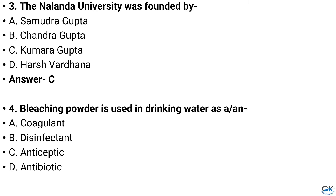Question number 4. Bleaching powder is used in drinking water as a — Option A: Coagulant, Option B: Disinfectant, Option C: Antiseptic, Option D: Antibiotic. And the answer is Option B: Disinfectant.